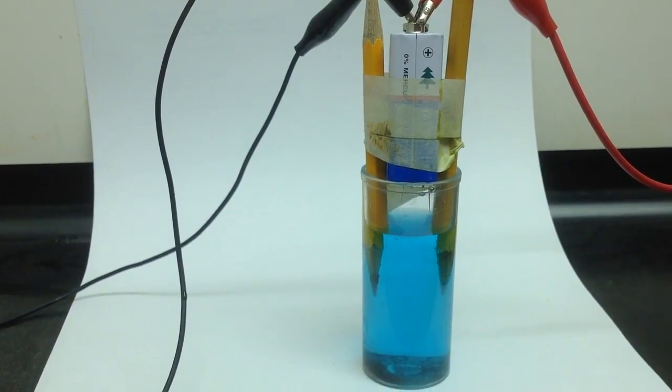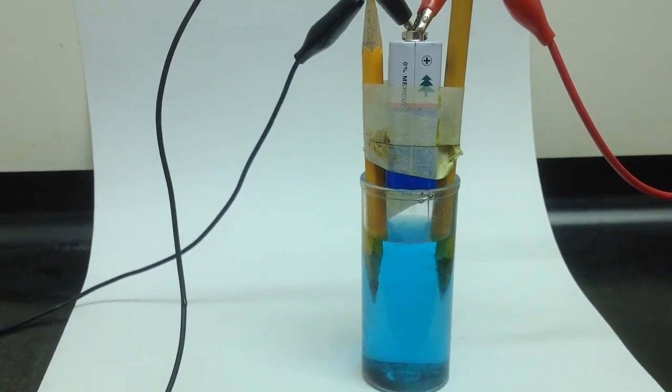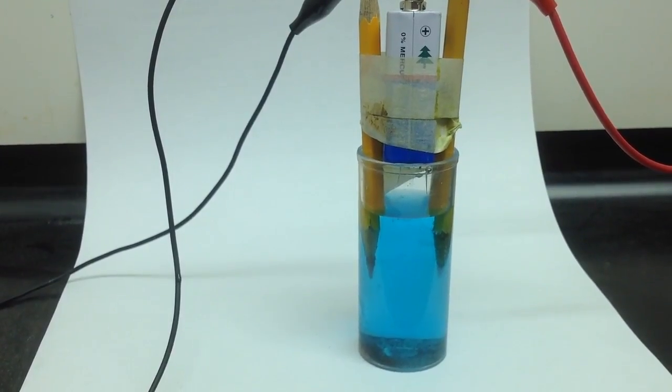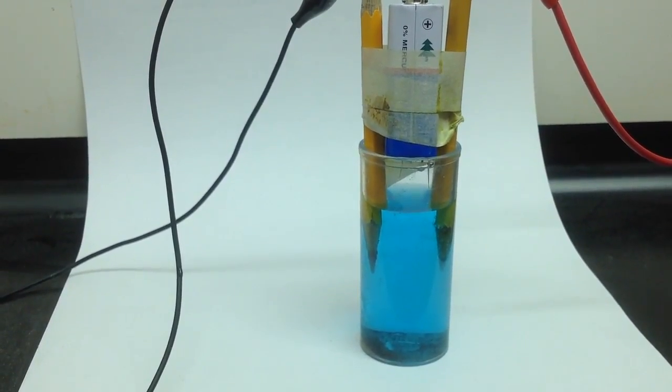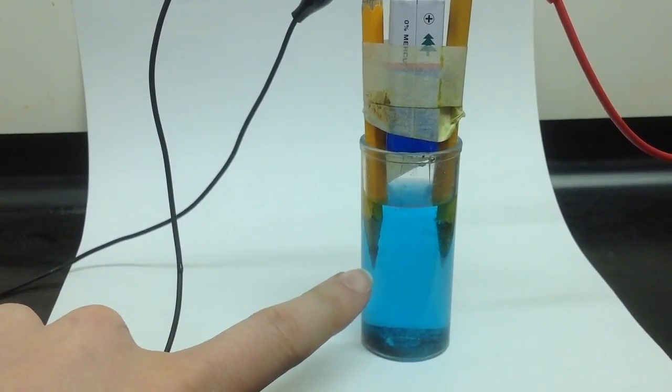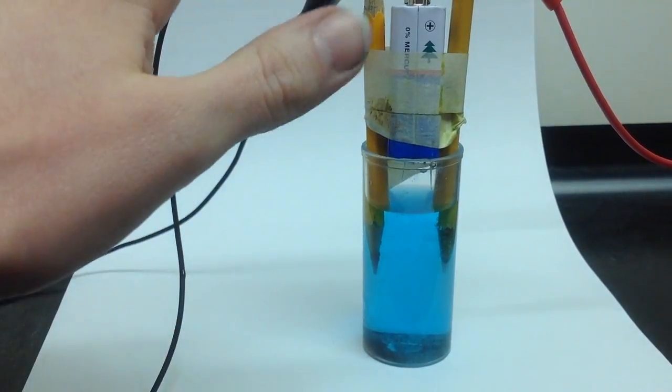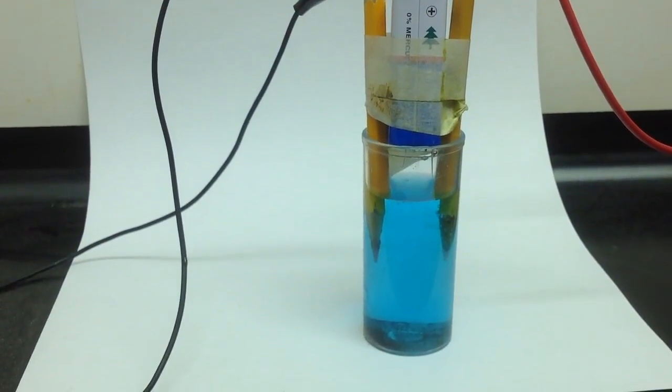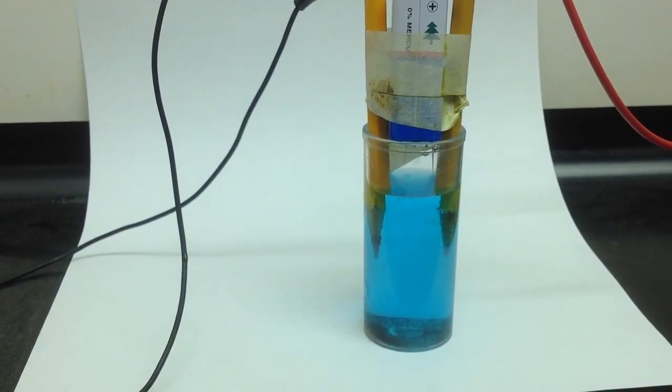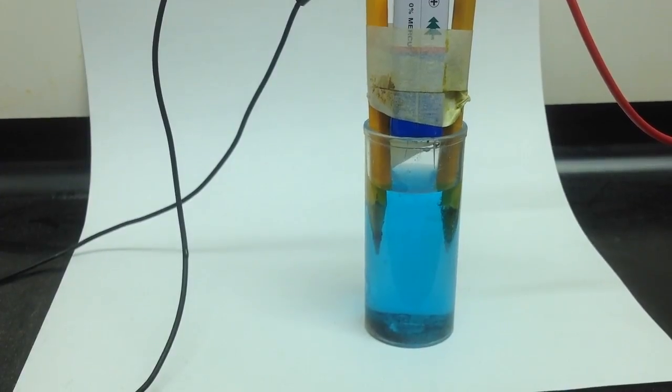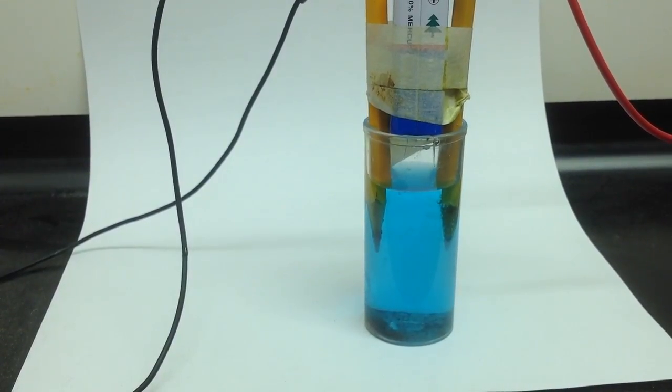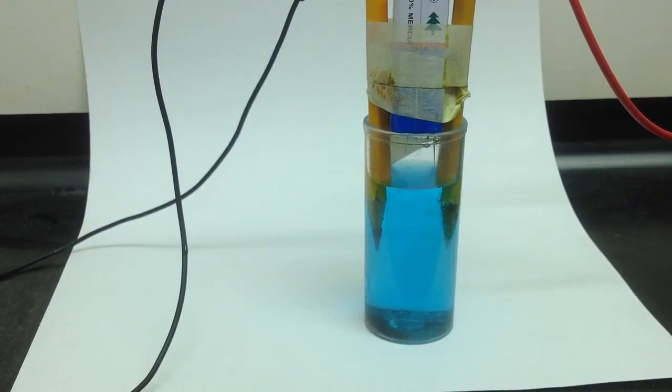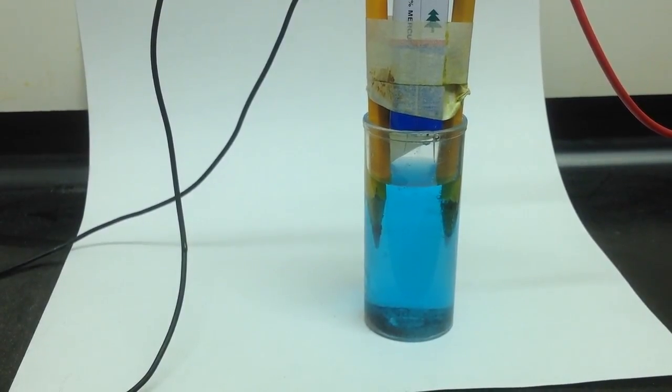If my chlorine is being attracted to the positive side of my battery, that means that my chlorine is a negative charge. Similar to my copper, it's accumulating on this side, which was attached to my negative end. So, my copper flakes, my copper pieces, are attracted to the negative end of a battery, while opposite charges attract. So, my copper is going to be positively charged.